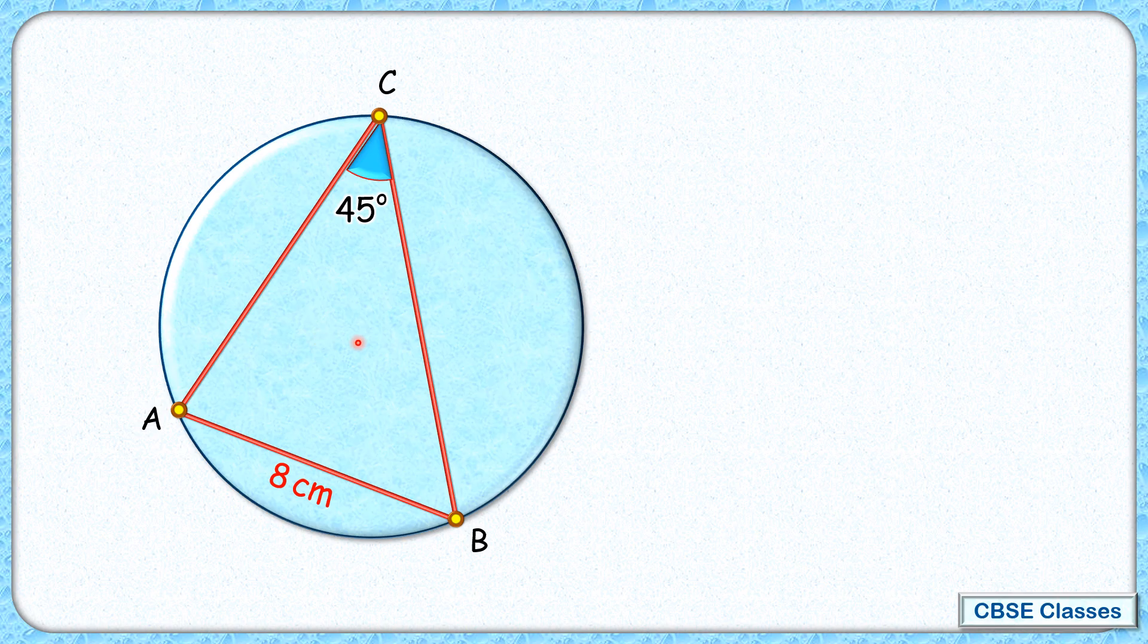Let's start by assuming the center of the circle is point O and the radius of the circle is r centimeters. And thus, BO length will also be r centimeters. Now this AB chord is sustaining an angle of 45 degrees at the circumference.